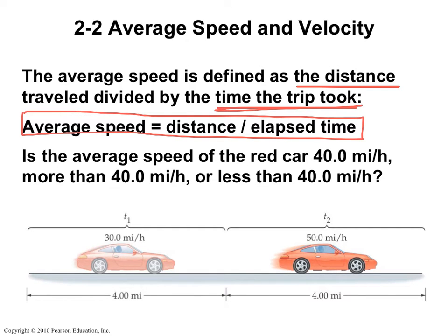So let's look at the situation down here. This car went 4 miles at 30 miles per hour, and then another 4 miles at 50 miles per hour. So is my average speed 40 miles per hour, or is it more or less?